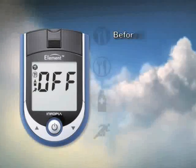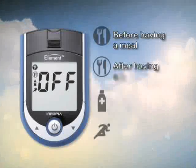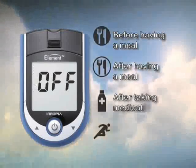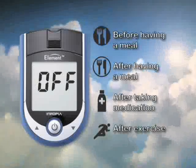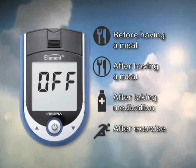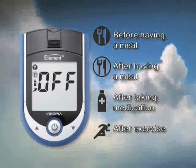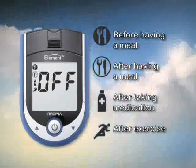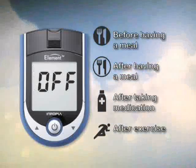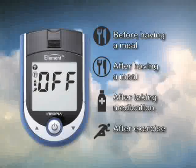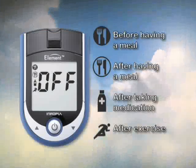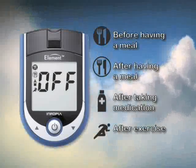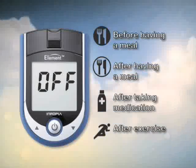The first icon is a colored in plate, representing a full plate. This means you tested your blood sugar before you had your meal. The second icon is an empty plate, which means you tested your blood sugar after your meal.